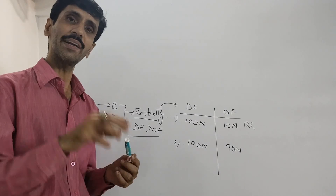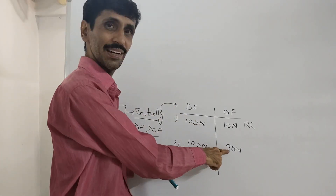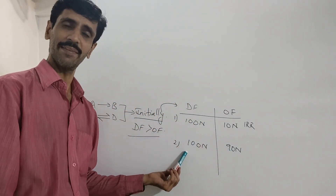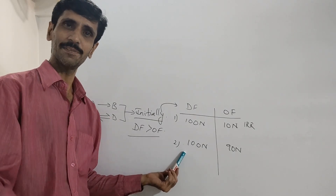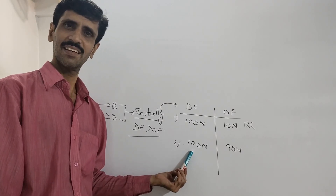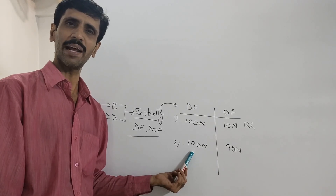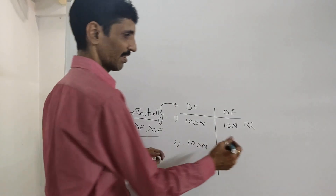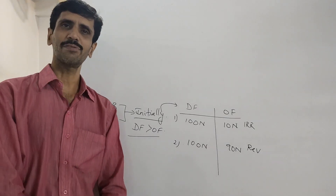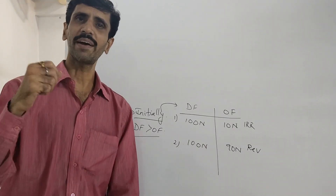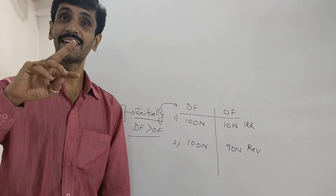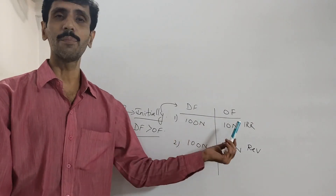But here, the same 20 N opposing force if I increase over here, 90 plus 20 becomes 110. That means it crosses the value of the driving force after the reaction has started. And when it crosses the value of the driving force, it is obvious that it is going to change the direction. And the process is going to change direction, therefore I call this a reversible process. So the most important factor which is responsible for the difference between the reversible and the irreversible is the difference between the driving force and the opposing force.